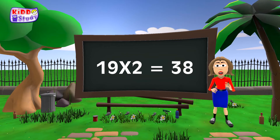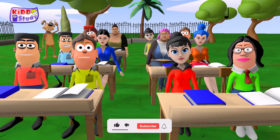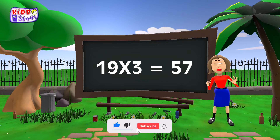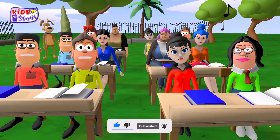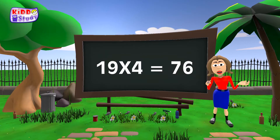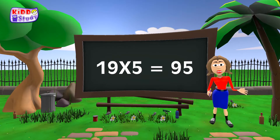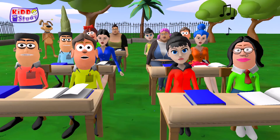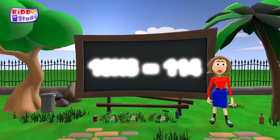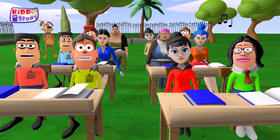Nineteen 2s are Thirty-eight. Nineteen 3s are Fifty-seven. Nineteen 4s are Seventy-six. Nineteen 5s are Ninety-five. Nineteen 6s are One Fourteen.